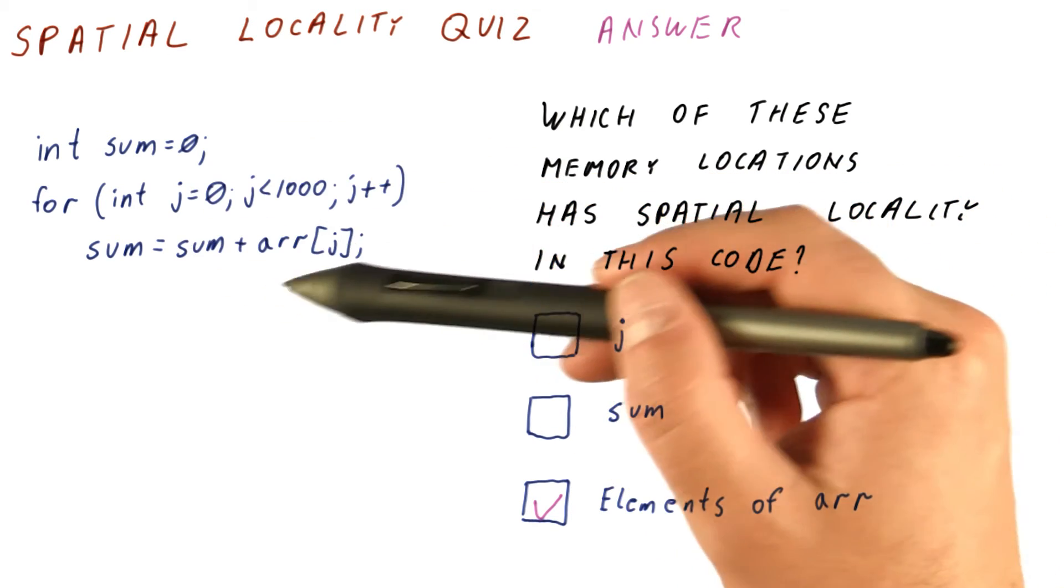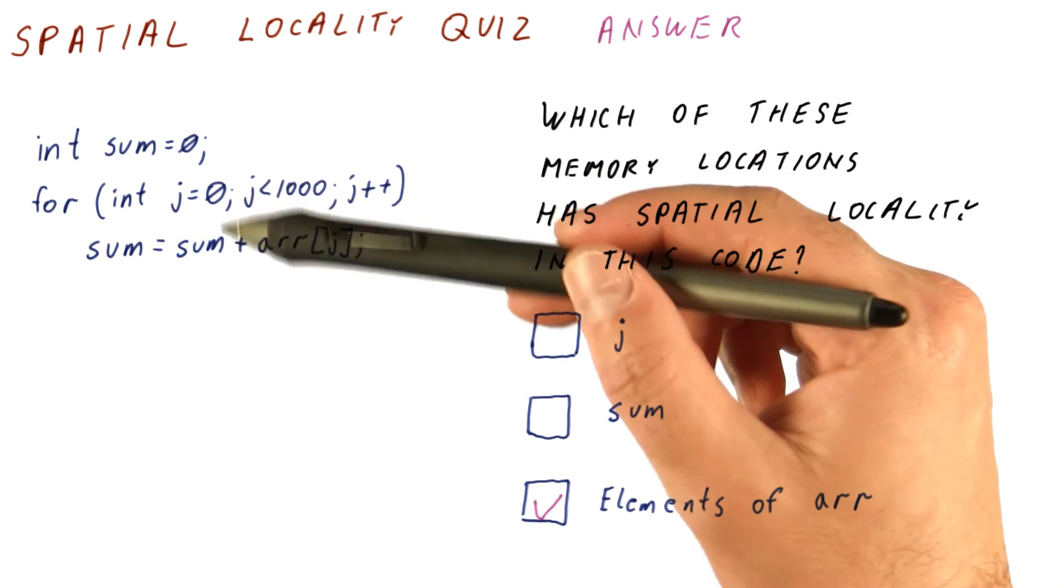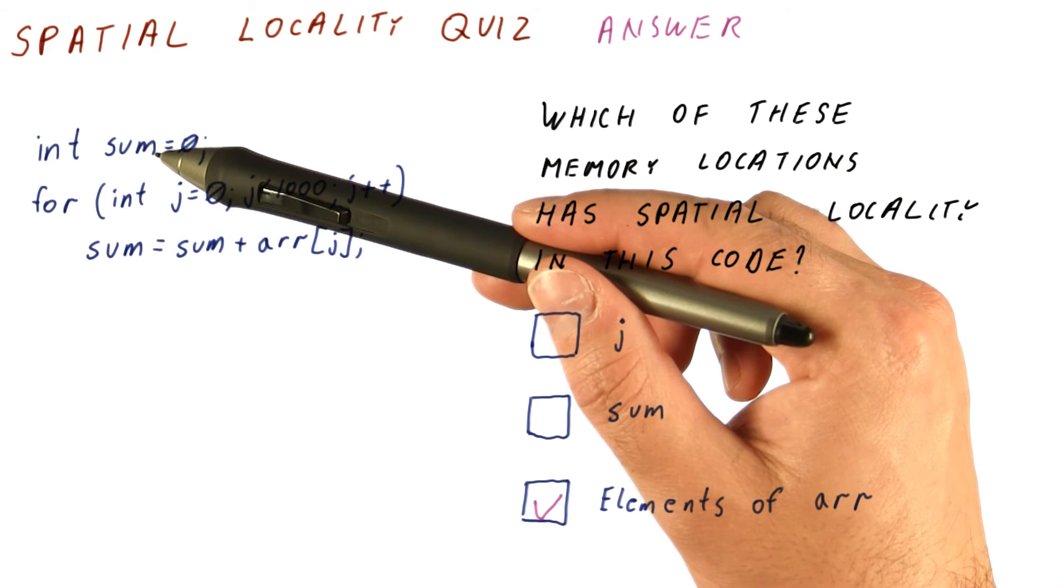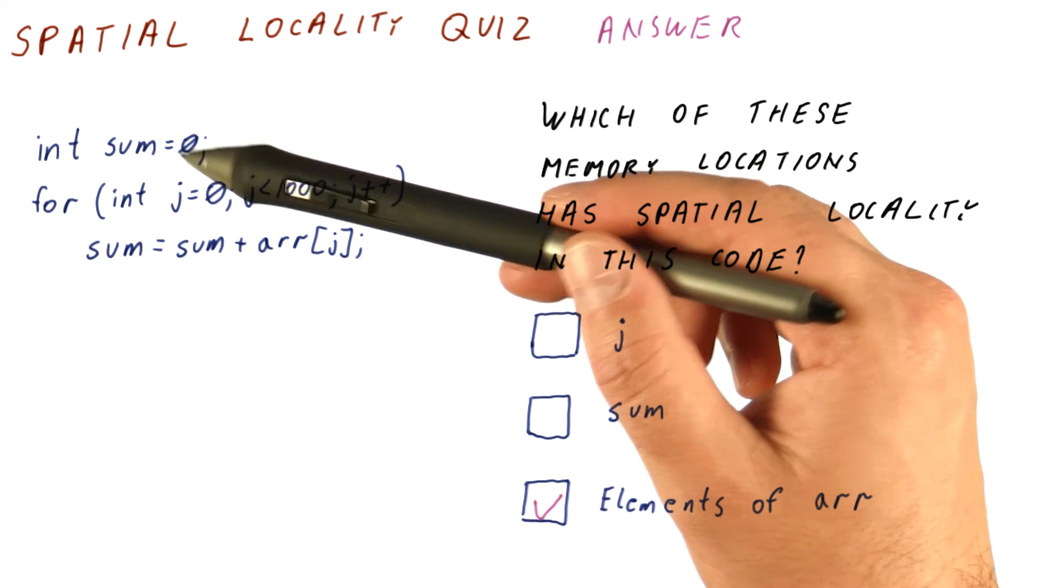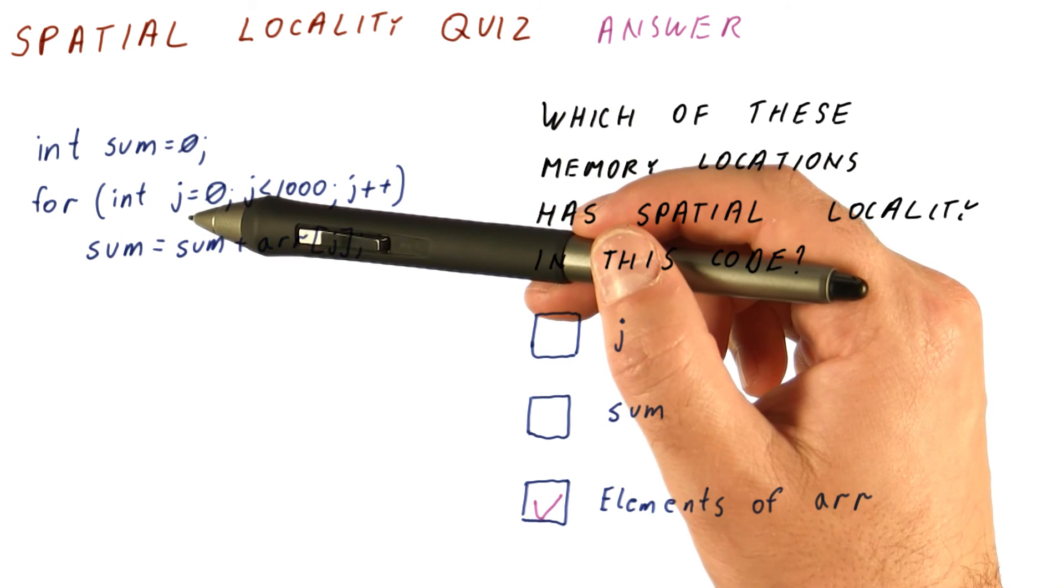It turns out that the way this program is compiled usually means that there will be some spatial locality between j and sum. J and sum are likely to be allocated by the compiler on the stack near each other. So when we access sum and then access j, that might be an example of spatial locality.